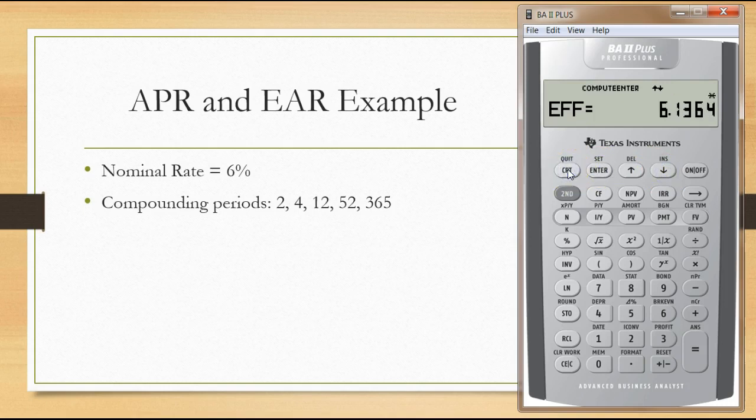The effective rate goes up marginally to 6.1678 percent. For weekly compounding - 52 weeks per year - enter that, go back to the effective rate and compute. The effective rate has increased to 6.18 percent.